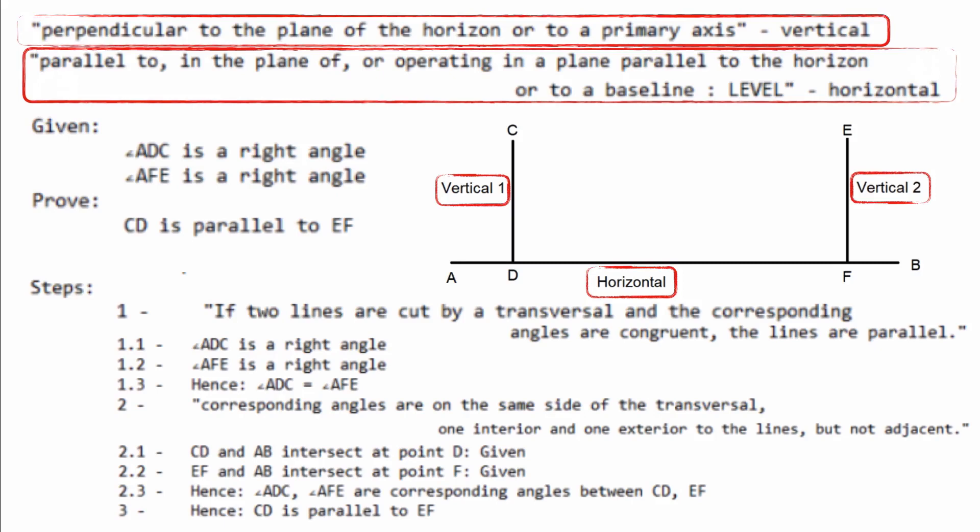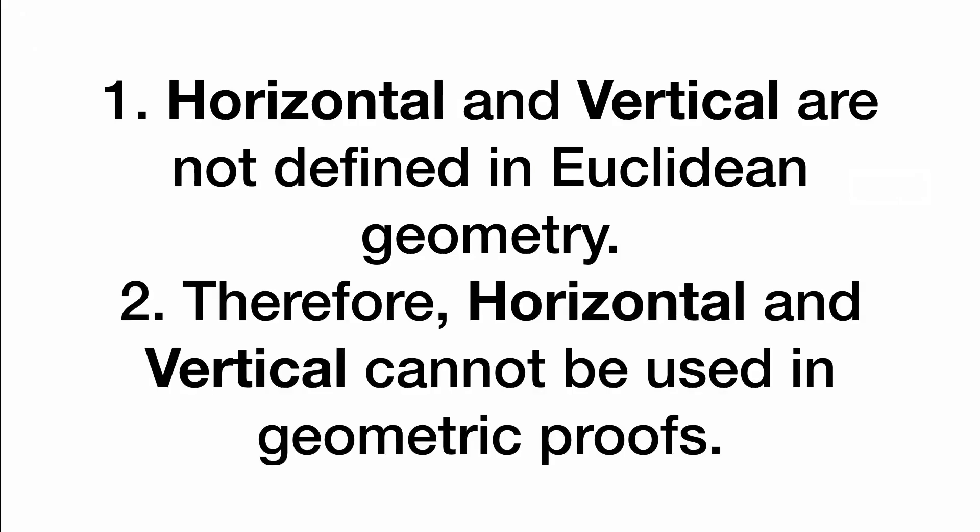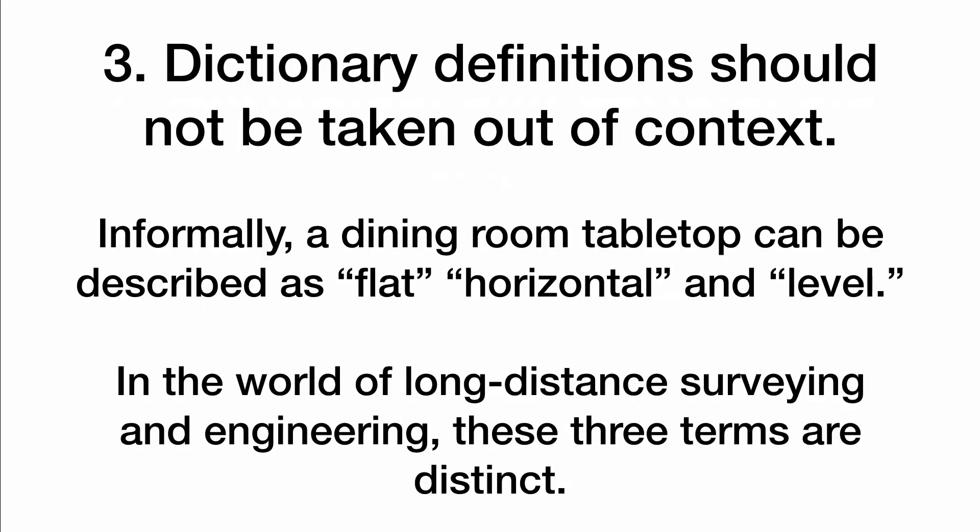Let's draw some conclusions and bring this video to a close. 1. Horizontal and vertical are not defined in Euclidean geometry. 2. Therefore, horizontal and vertical cannot be used in geometric proofs. 3. Dictionary definitions should not be taken out of context. Informally, a dining room tabletop can be described as flat, horizontal, and level. But in the world of long-distance surveying and engineering, these three terms are distinct.